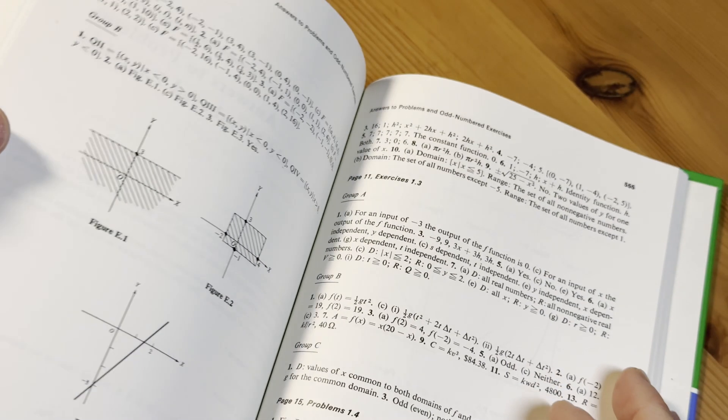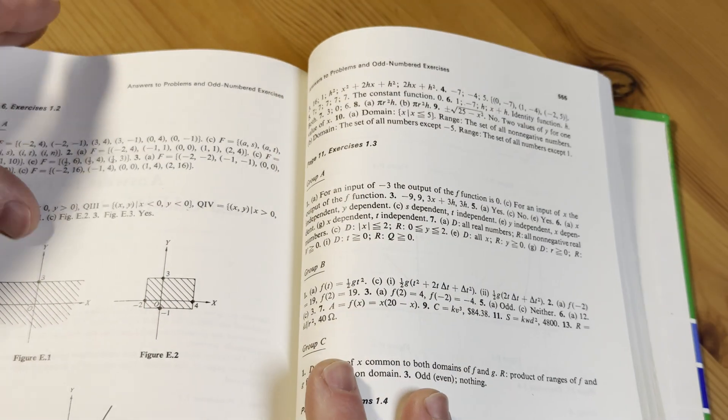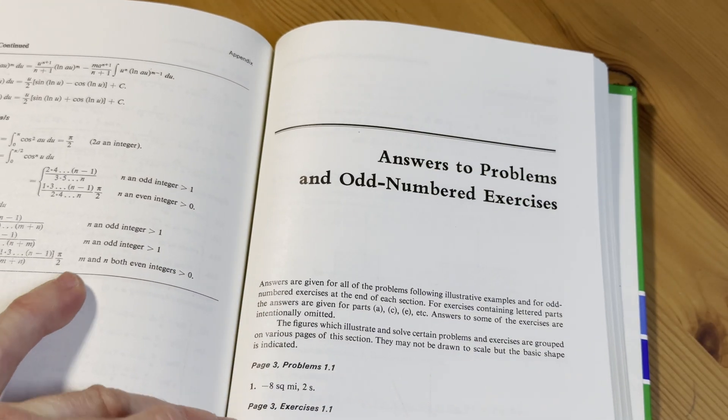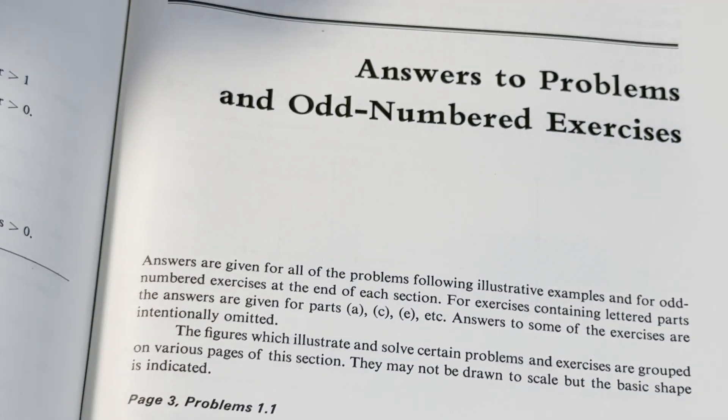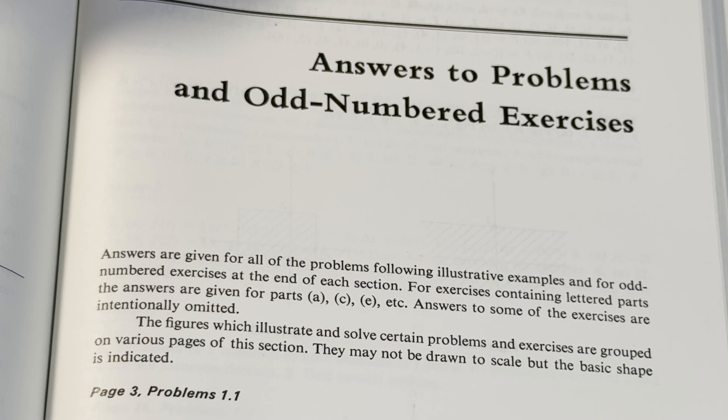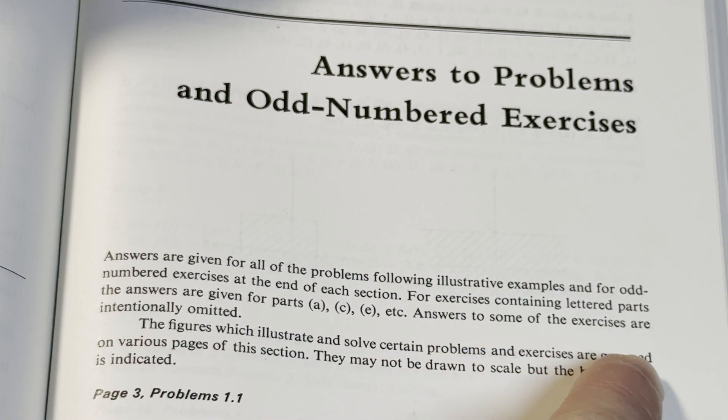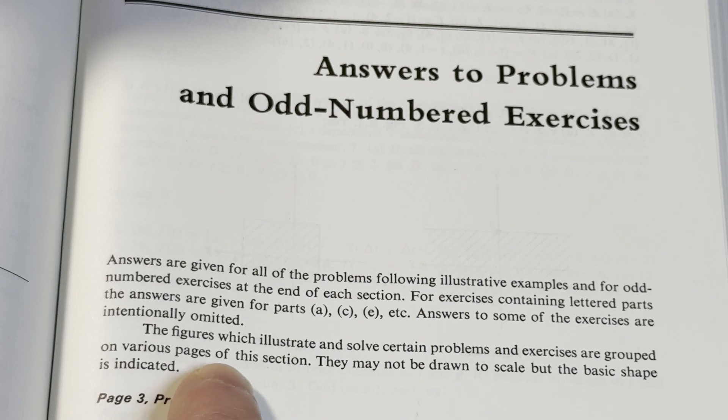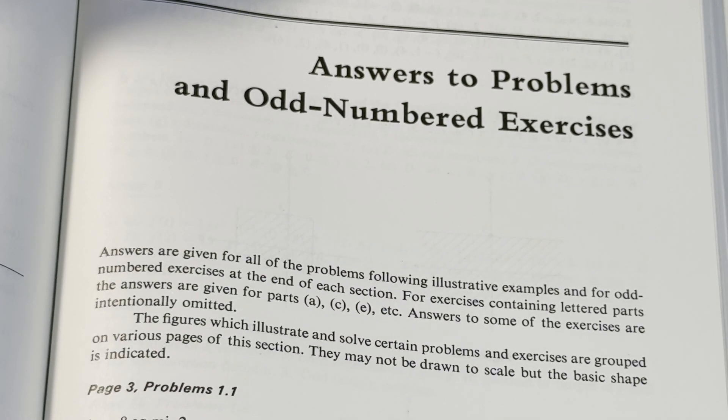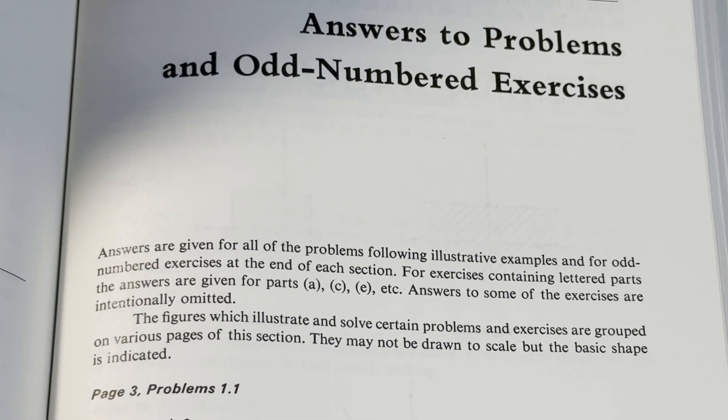Let's go to 553 right now. So you can see those are the integrals. Starts here. It says here, answers are given. Let's read this. I like how it explains it. Answers are given for all of the problems following illustrative examples. Okay. And for odd numbered exercises at the end of each section. For exercises containing lettered parts, yeah, the answers are given for parts A, C, E. Right. Answers to some of the exercises are intentionally omitted. The figures which illustrate and solve certain problems in exercises are grouped on various pages of this section. They may not be drawn to scale, but the basic shape is indicated. Yeah.